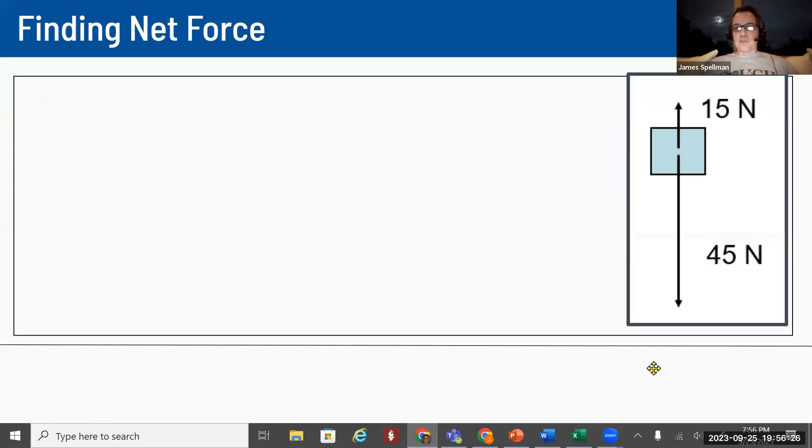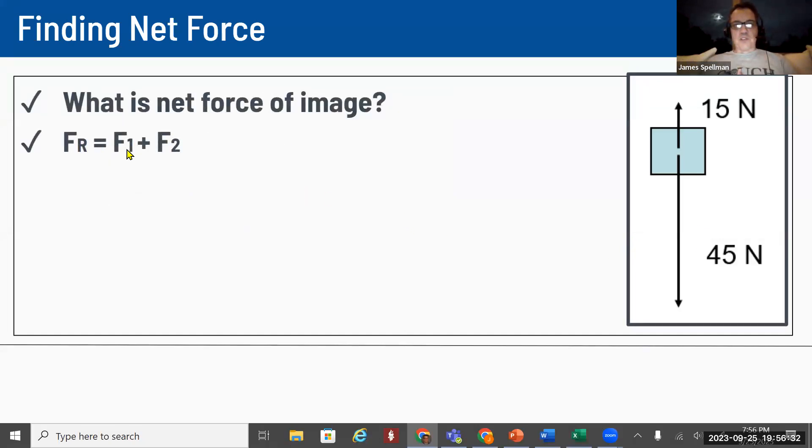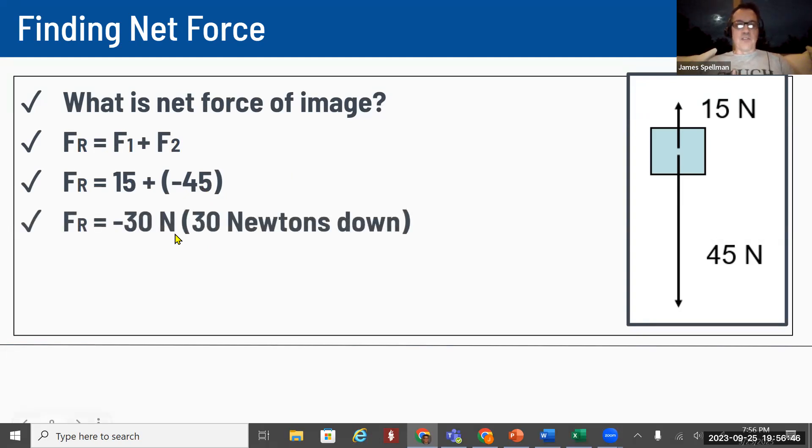Similarly, this diagram shows 15 newtons up and 45 newtons down. So if we wanted to get the net force, we need to add all the forces together and take into account these are going in opposite directions. Generally, the down direction is considered to be negative. So I've got 15 going up and 45 going down. Put those together and we get a resultant force of negative 30 newtons. And this is going to be 30 newtons in the downward direction.